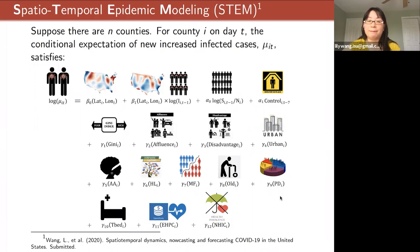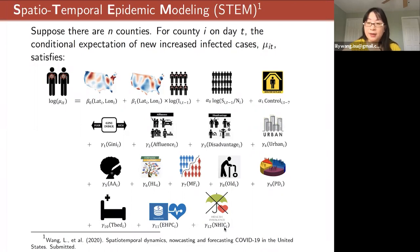We also considered health infrastructure such as the total number of hospital beds in the county, local government expenditures for health per capita (EHPC), and the percentage of persons under 65 without health insurance coverage. All of these are put into the model, and we can continue to add more later — for example, mask usage and mobility data can also be included in our model as long as you have that data accessible.